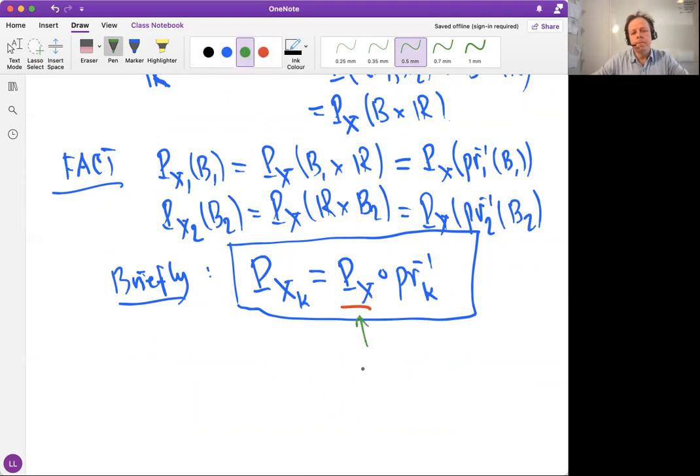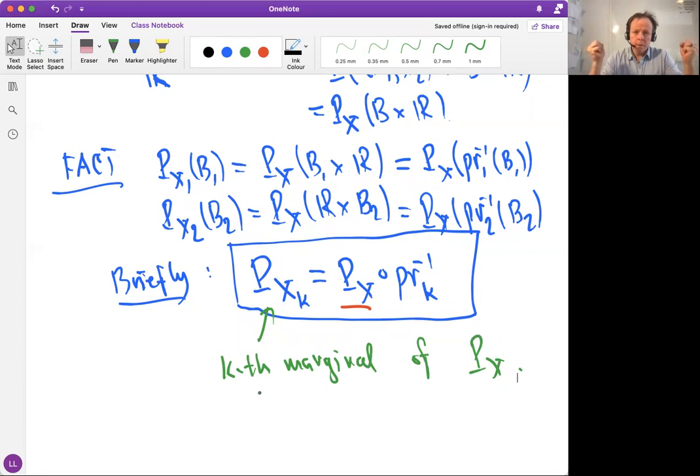We also note that this is called the kth marginal distribution. This is called the kth marginal of P_X. This is the probability measure in the vector space. And these marginals are probabilities on the real line. This is the story about marginal distributions in the really general framework. Do you have questions about this? We will go to more concrete examples in a while. What is marginal distribution in Finnish? Margin means reuna. So I would call it reunajakauma.